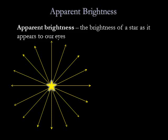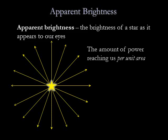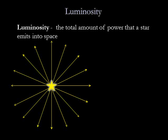Because two similar-looking stars can be generating very different amounts of light, we need to distinguish clearly between a star's brightness in our sky and the actual amount of light that it emits into space. A star's apparent brightness is how it appears to our eyes. We define apparent brightness as the amount of power reaching us per unit area, or power per square meter. Luminosity is the total amount of power that a star emits into space. When we talk about how bright stars are in an absolute sense, regardless of their distance, we're talking about luminosity.